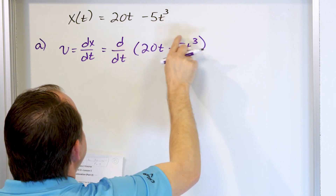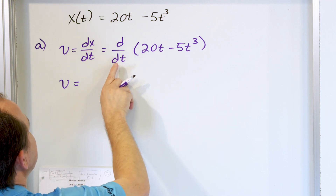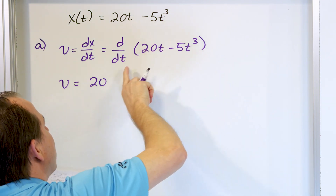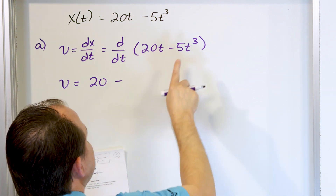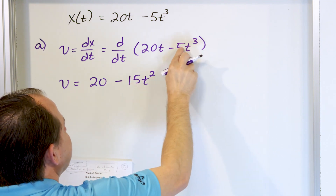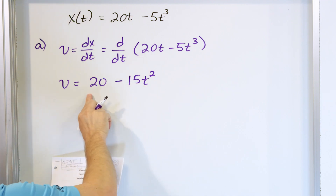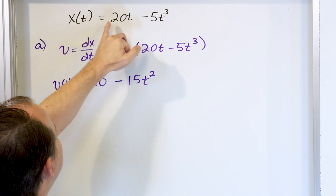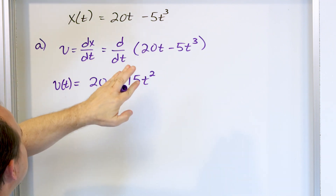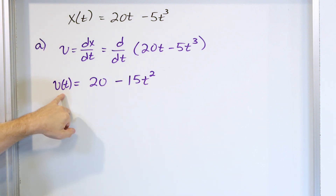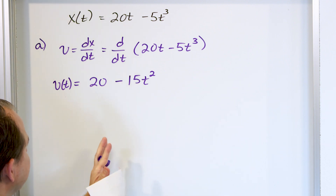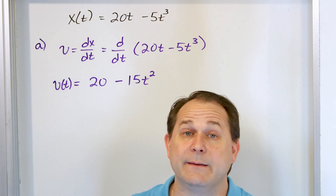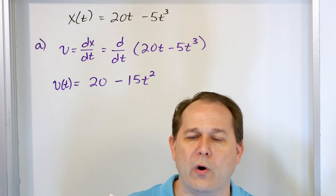The time derivative operates on everything inside, giving us a new function — the velocity. The derivative of 20t is just 20 (exponent 1 times 20, then t to the 0 power which is 1). Then 3 times 5 is 15, and the exponent reduces by 1, giving t squared. So the velocity as a function of time is v(t) = 20 - 15t². At t = 0, the particle is already moving at 20 meters per second.